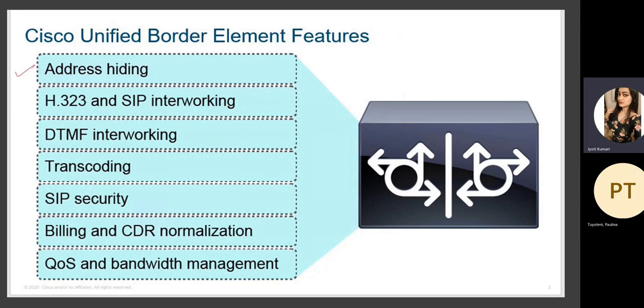CUBE has address hiding — it can hide addresses used for NATing or security purposes. If we do not want to show our original numbers or URIs, we can use mapping or hiding the numbers under any other standard number known to the customer without revealing the actual number. Address hiding is one of the key features CUBE provides. It also supports H.323 to SIP internetworking, H.323 to H.323, and SIP to SIP.